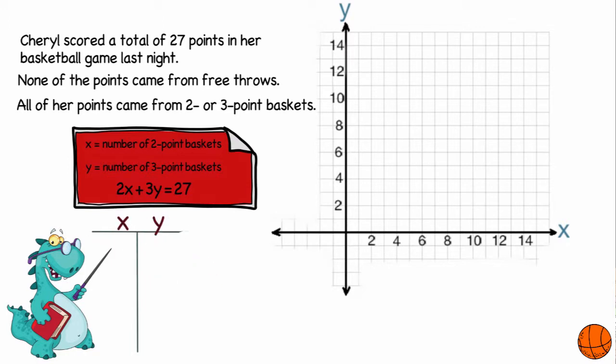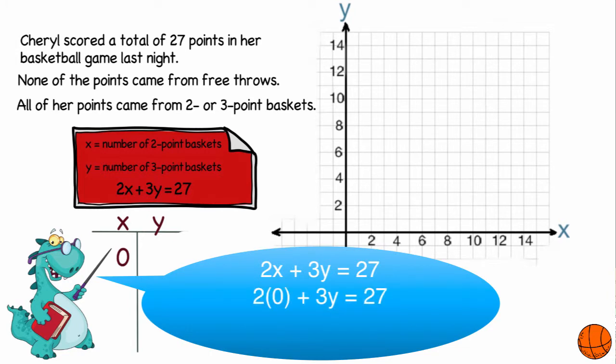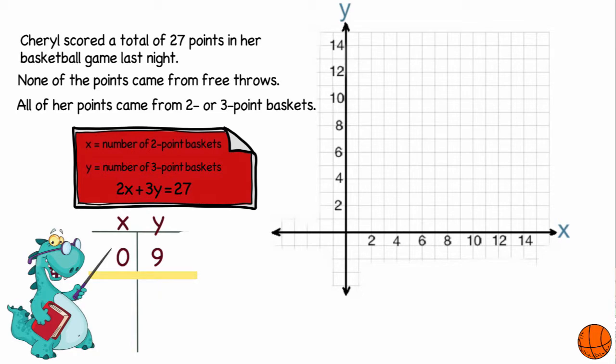The easiest coordinates that I would use would be if she had made no two-point baskets at all. So when x is 0, I have 2 times 0 plus 3y equals 27. And then you have 0 plus 3y equals 27. So 3y equals 27. So y equals 9. So the first coordinate would be zero two-point baskets and nine three-point baskets.